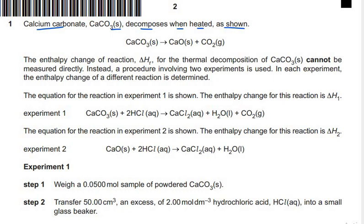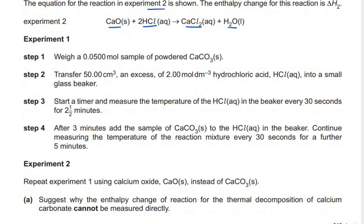The enthalpy change delta Hr for the thermal decomposition of calcium carbonate cannot be measured directly. Instead, a procedure involving two experiments is used. In each experiment the enthalpy change of a different reaction is determined. In experiment 1, calcium carbonate is reacted with hydrochloric acid to form the salt. In experiment 2, calcium oxide is reacted with hydrochloric acid again to form calcium chloride and water.